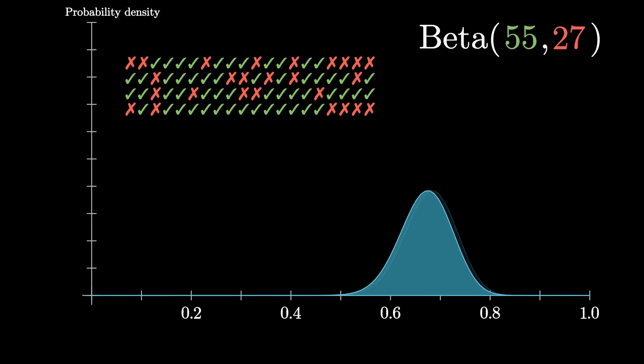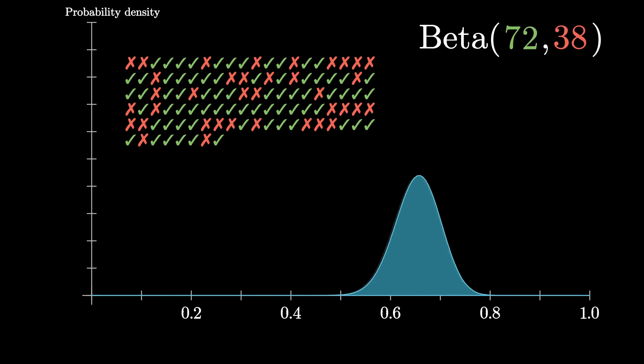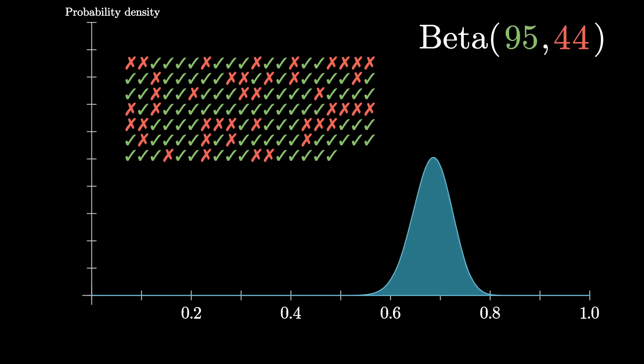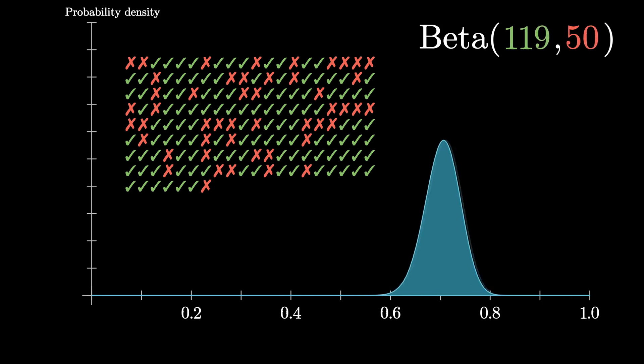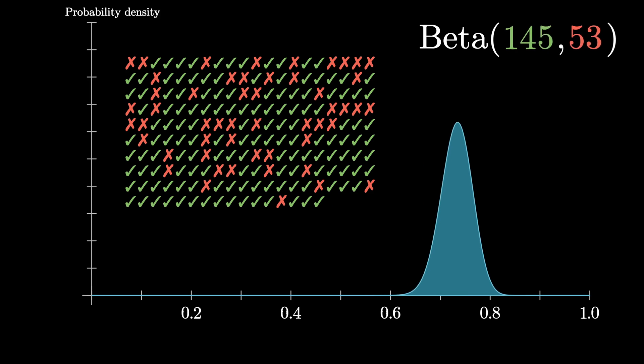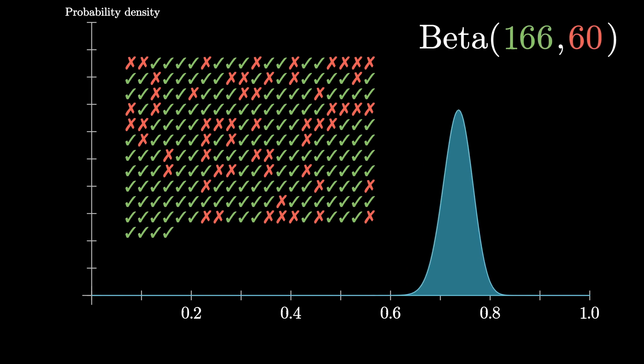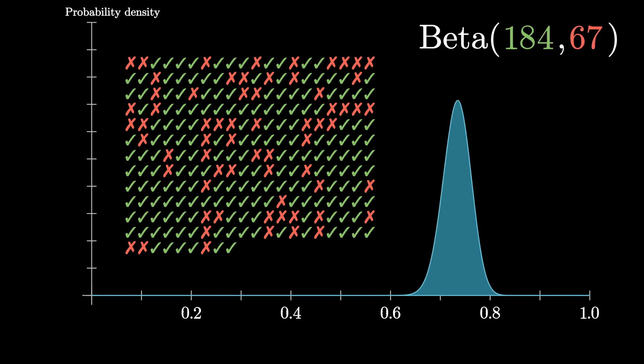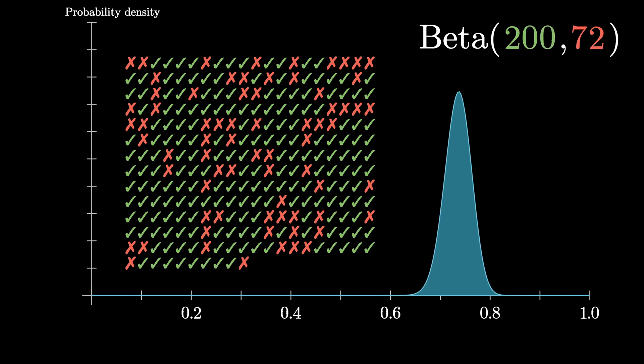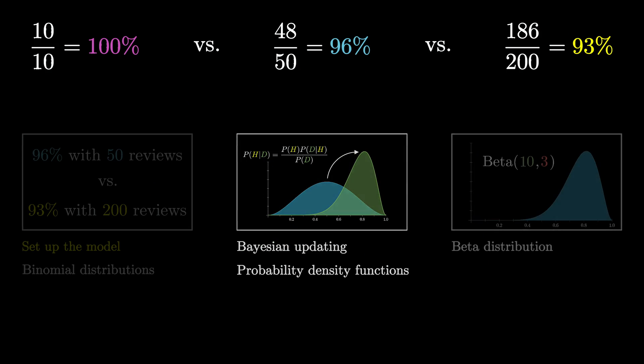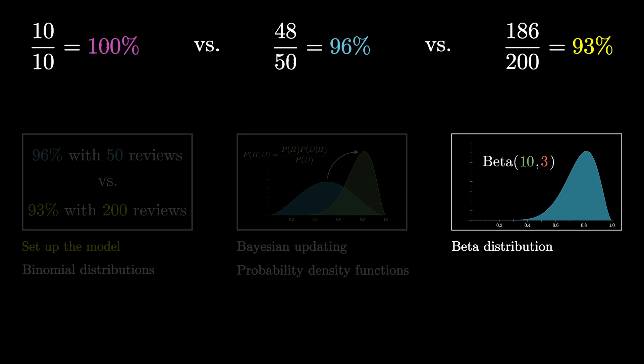These distributions you're looking at are all examples of what's known as a beta distribution. To dig into that distribution and how we can use it to analyze some data — for example, choosing the best online seller — I'll see you in part 3.